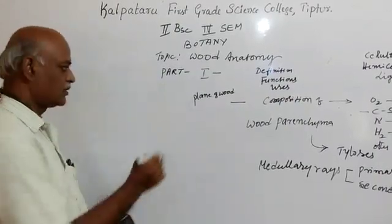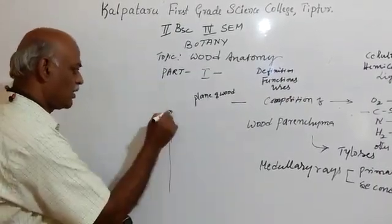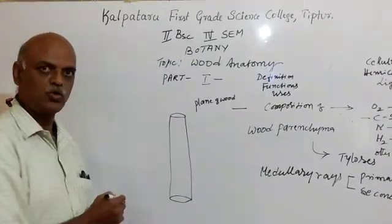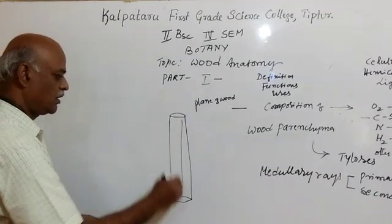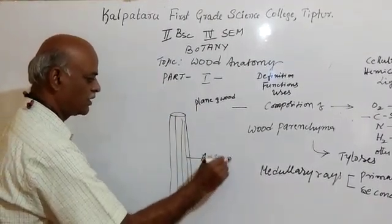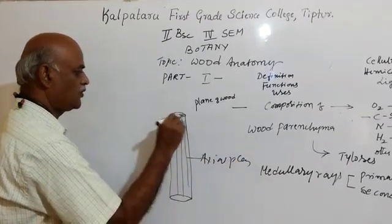If you take a wood log, a piece of wood, it exhibits two planes. One is the longitudinal plane, which we call the axial plane.